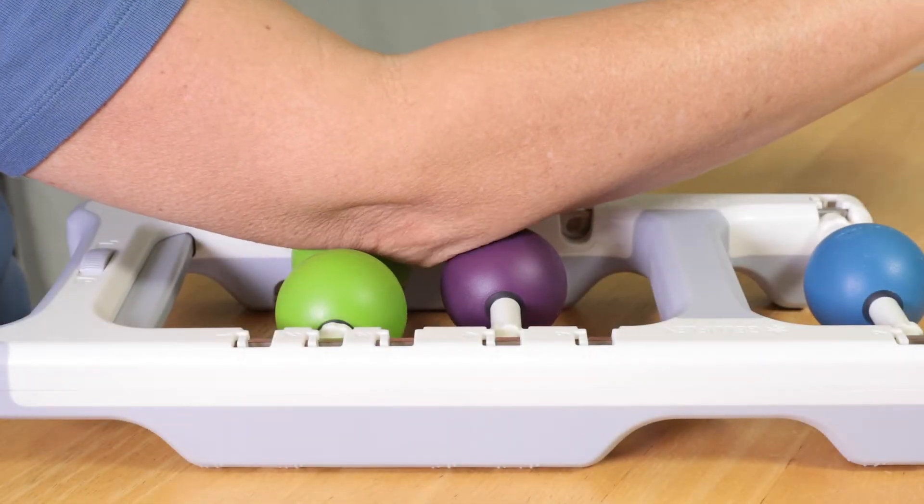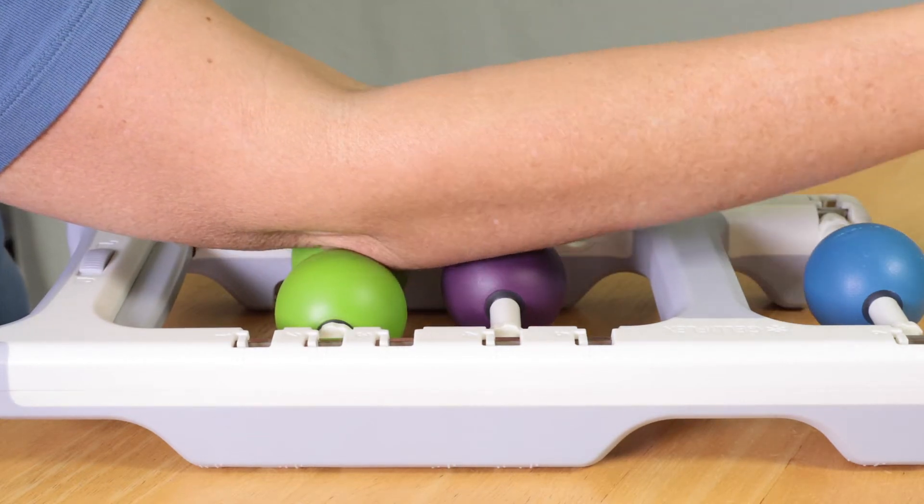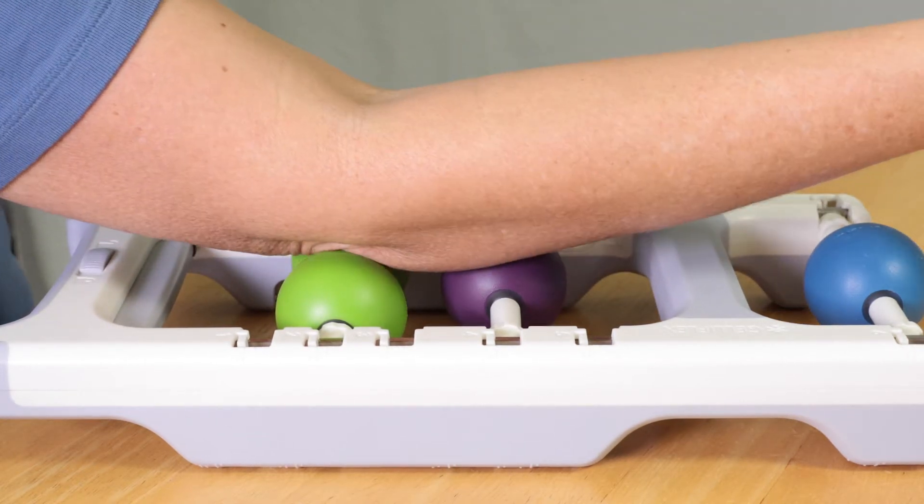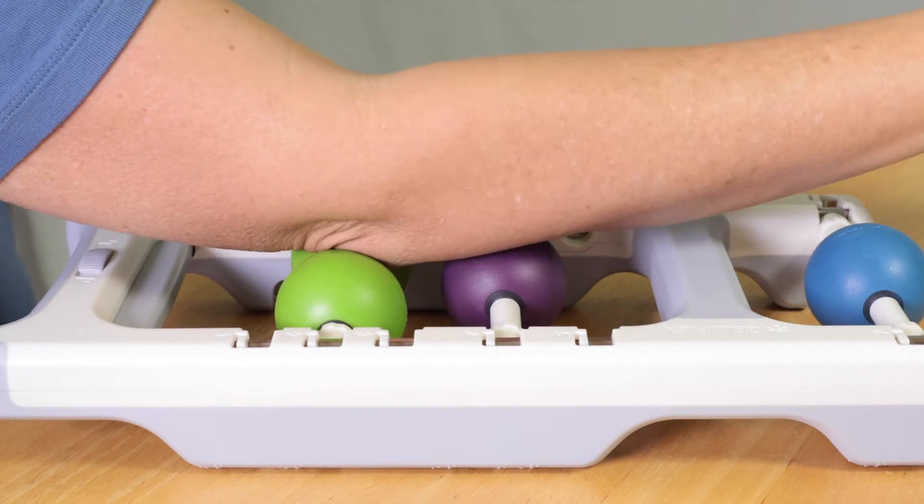Slowly roll your elbow region over one or more gel balls. Explore gently rolling above and below your elbow as well as your inner and outer elbow.